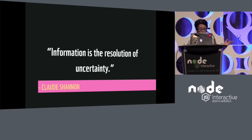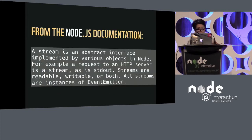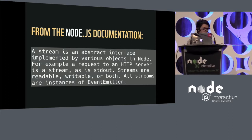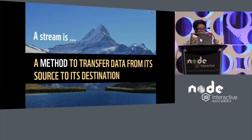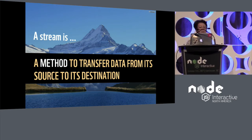So what does this all have to do with Node streams? Well, let's quickly look at the current definition in the documentation. A stream is an abstract interface implemented by various objects in Node. This is an incredibly generic definition, and in its most reductive form, streams is just a method to transfer data from its source to its destination. So this has everything to do with communication and everything to do with Claude Shannon's work.